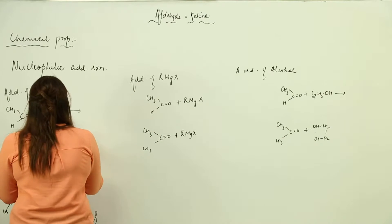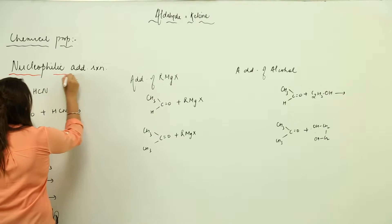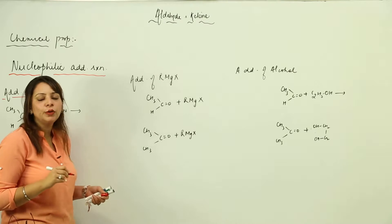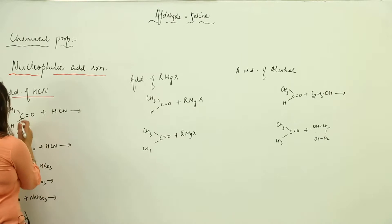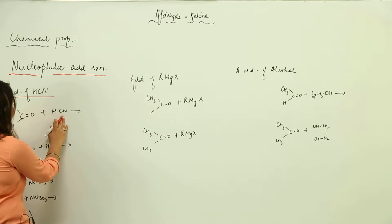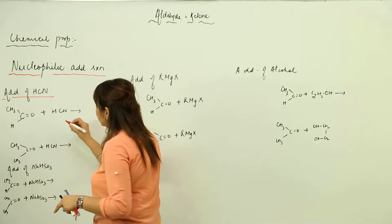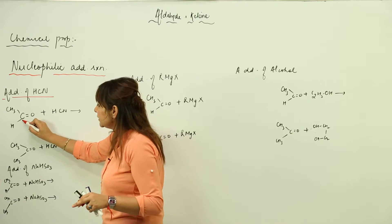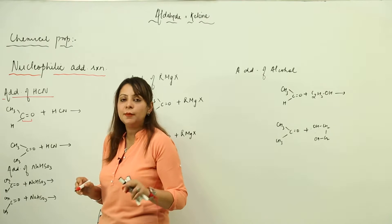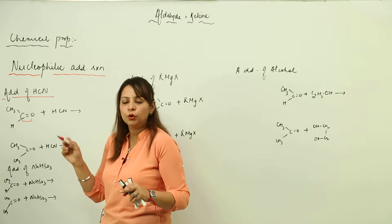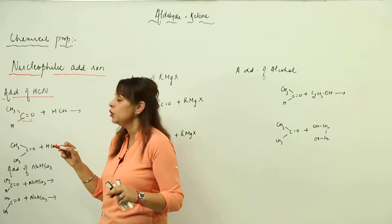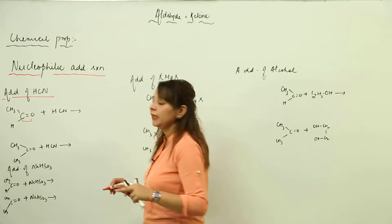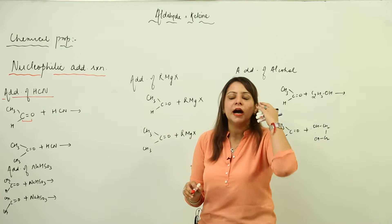We are going to see how an addition reaction takes place. First, I'm going to add HCN to this aldehyde. We know that addition occurs only when there is a double bond, and as we can see it contains a double bond because the carbonyl group has C double bond O, so we can add any substance to it.